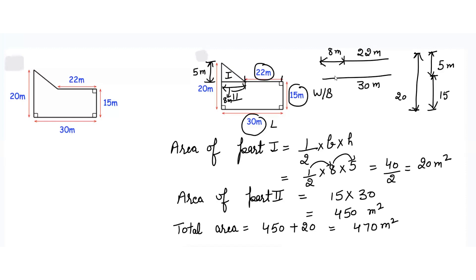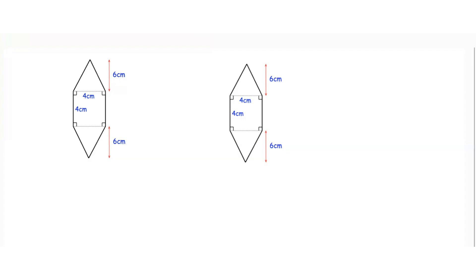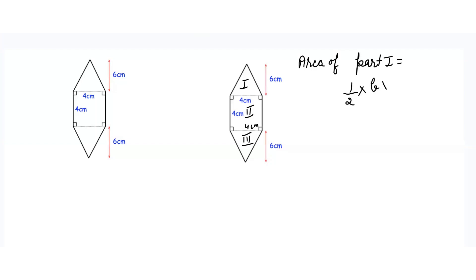So this is how we can find out the area of composite figures where we have triangles along with a rectangle or square. Now in this question the diagram is already divided into three different parts: part 1 is a triangle, part 2 is a square, and part 3 is a triangle. The base for the triangle is 4 centimeters. Area of part 1 is equals to 1 by 2 into B into H, which is 1 by 2 into base 4 and height is 6 centimeters, which gives 24 by 2 equals to 12 centimeter square.